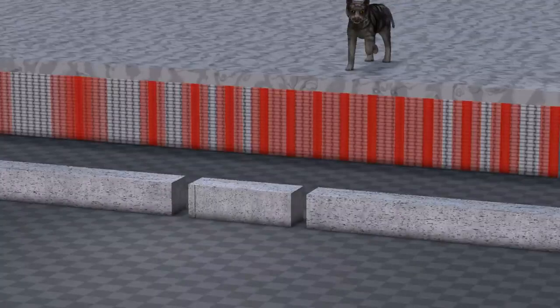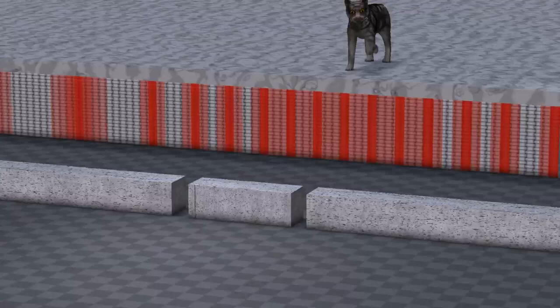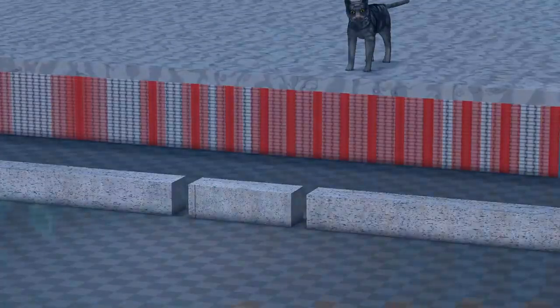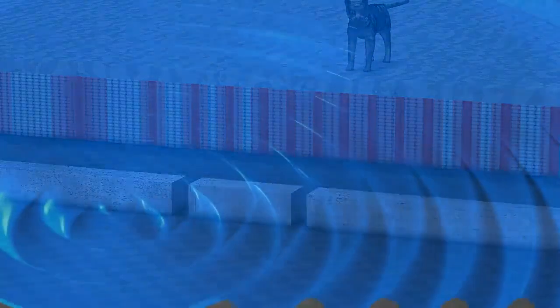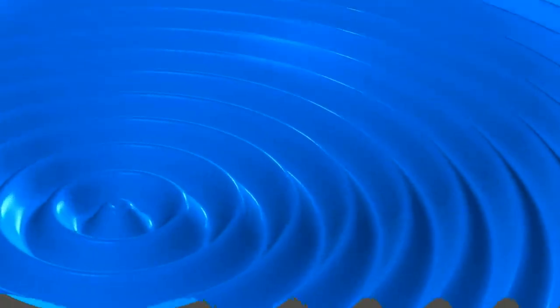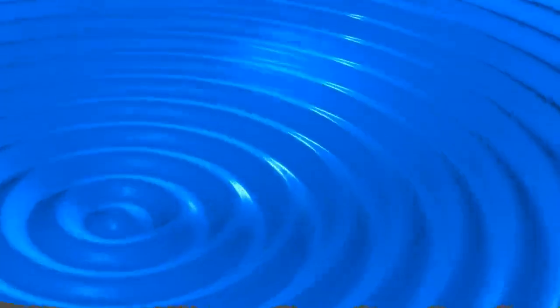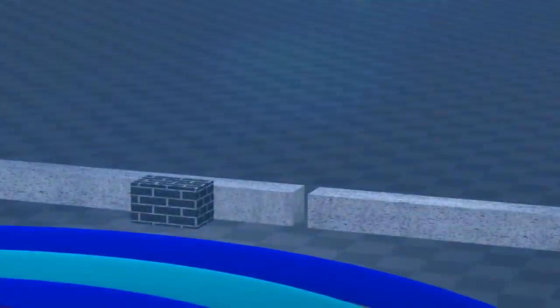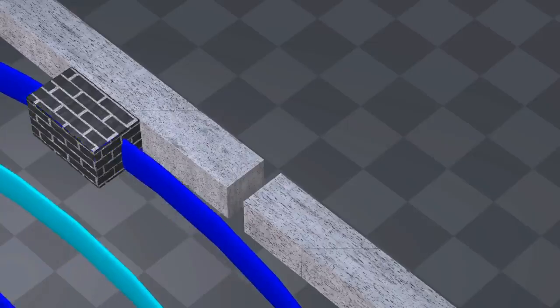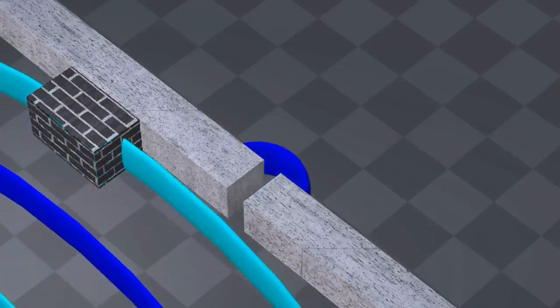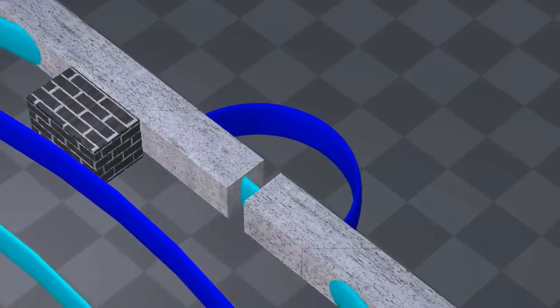No matter how many times we repeat this experiment, and no matter what type of object we use to replace the marbles, the result is always the same. Only one known phenomenon can explain this result: waves. When a wave passes through a hole, it spreads out on the other side.